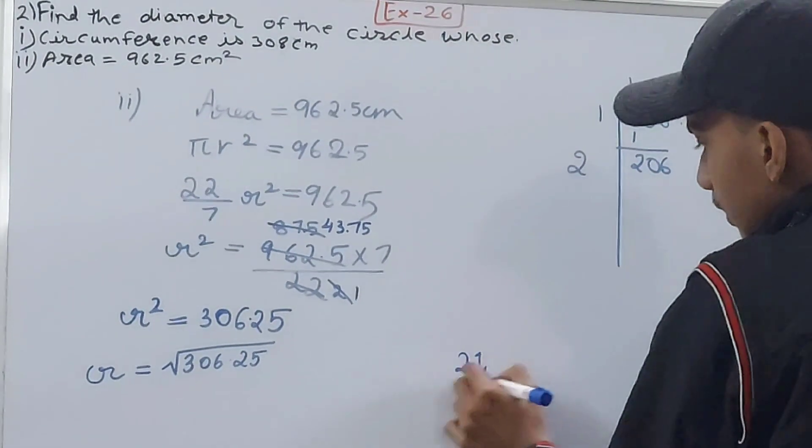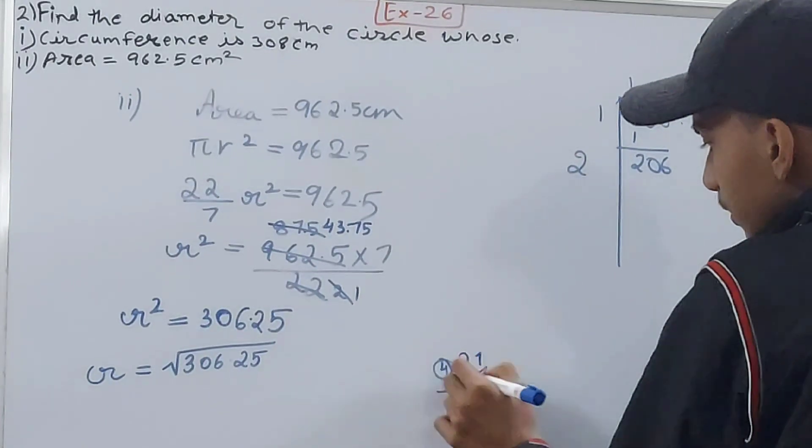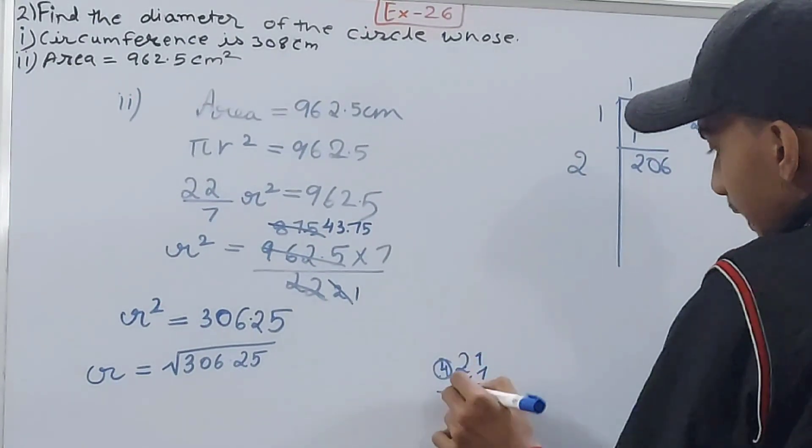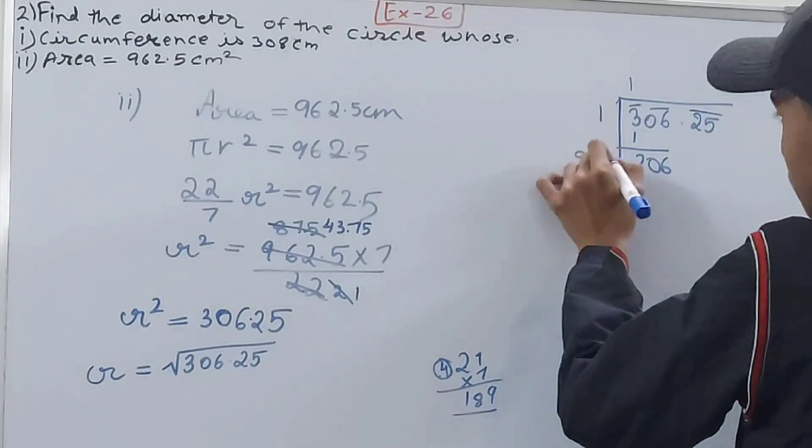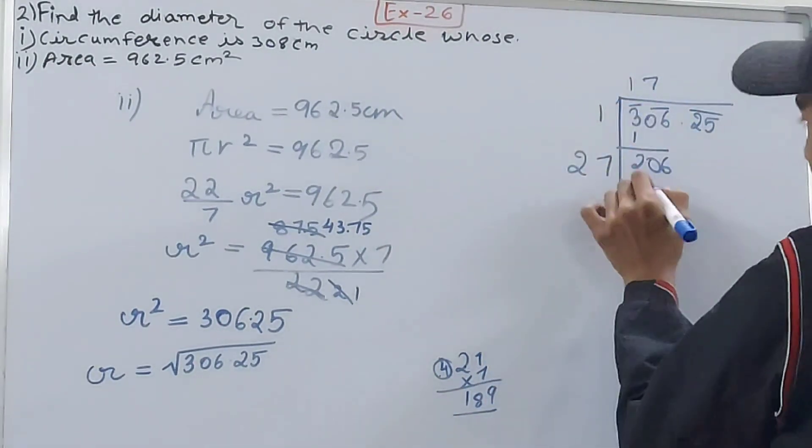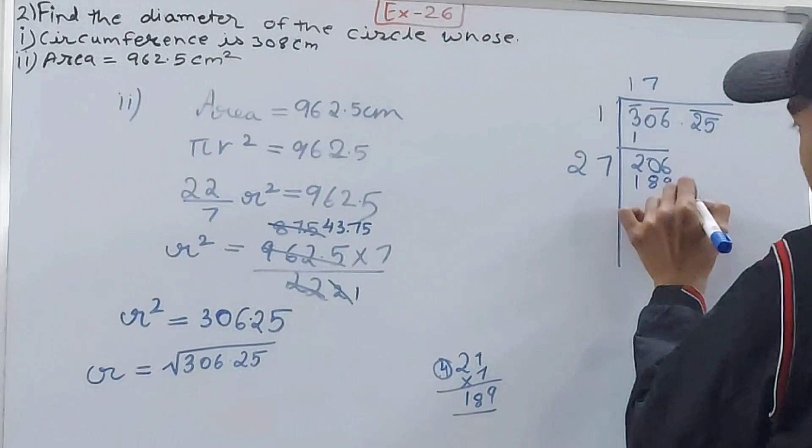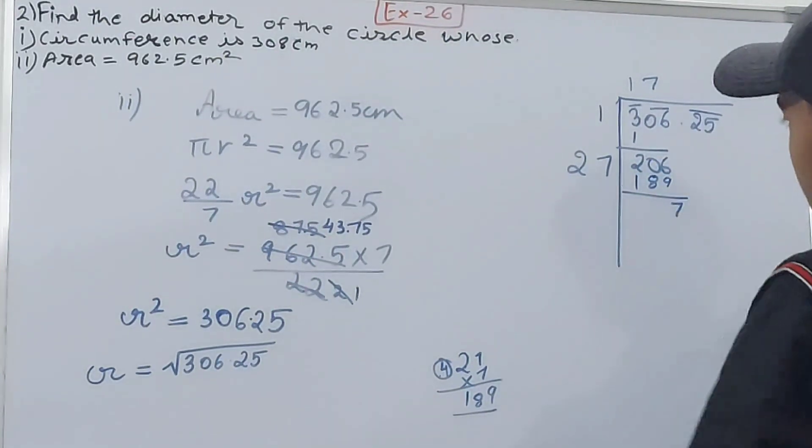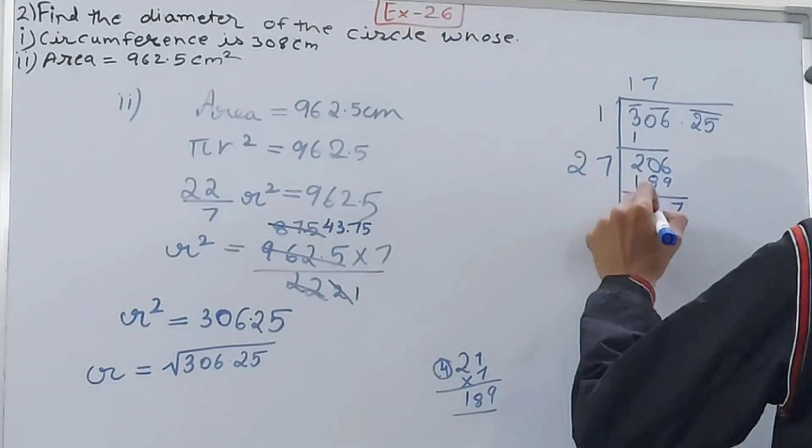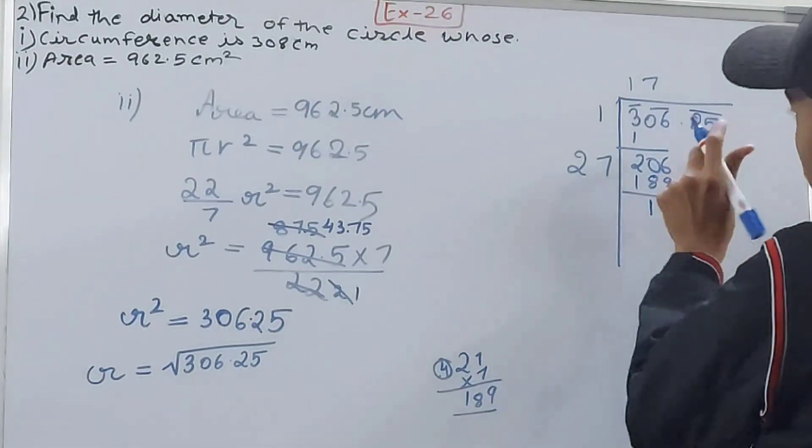The decimal point is over here, so in the quotient I will put the decimal point. Now 1725, double of 17, that's 34. And now 1725.